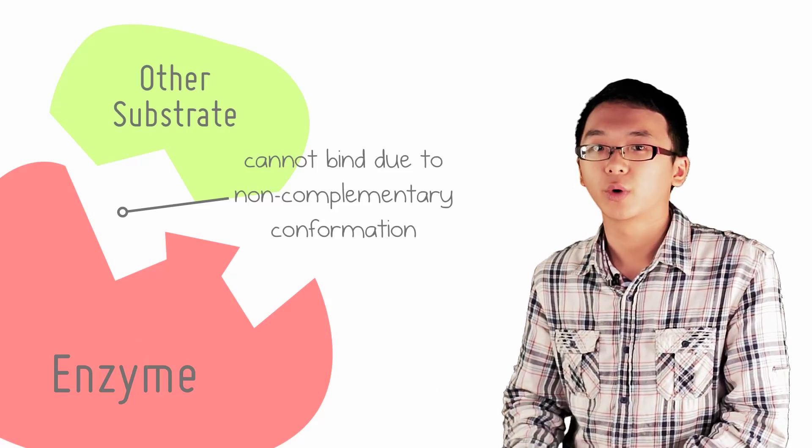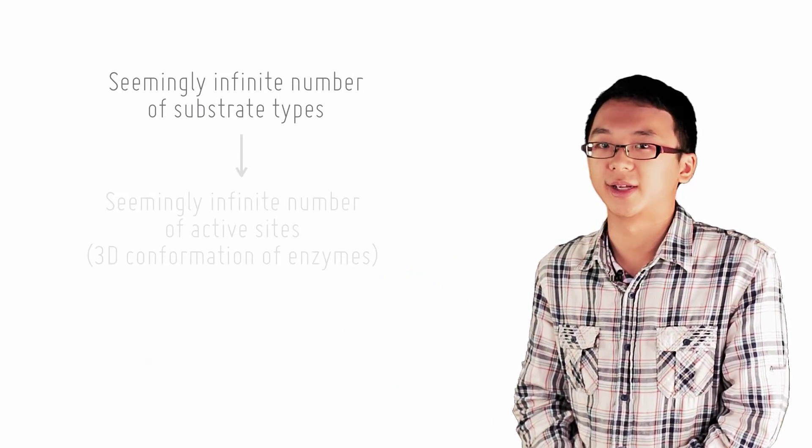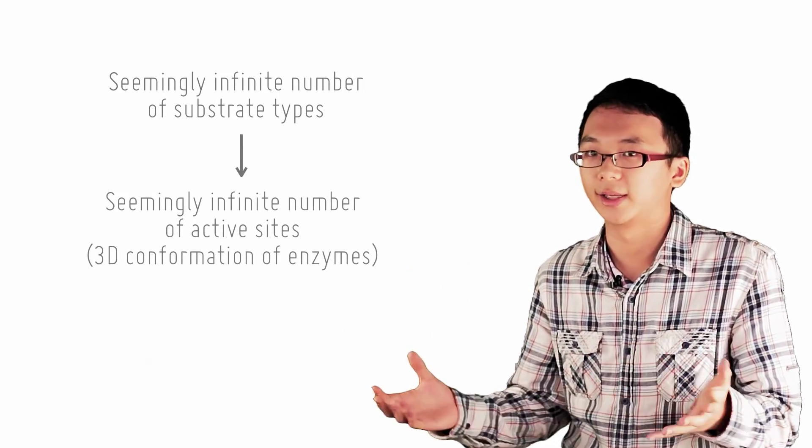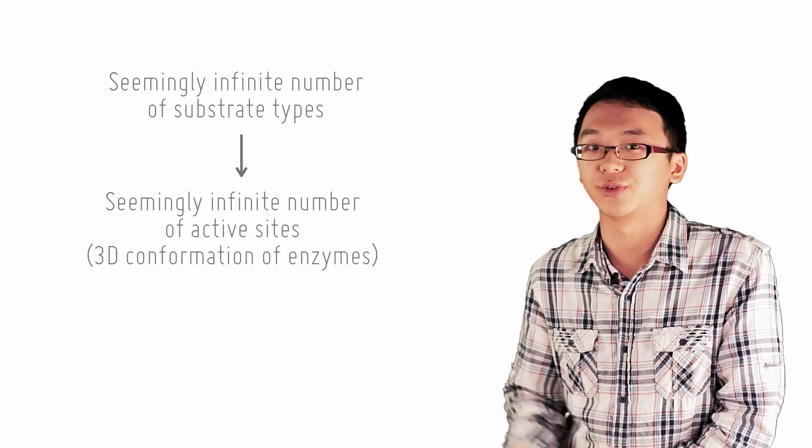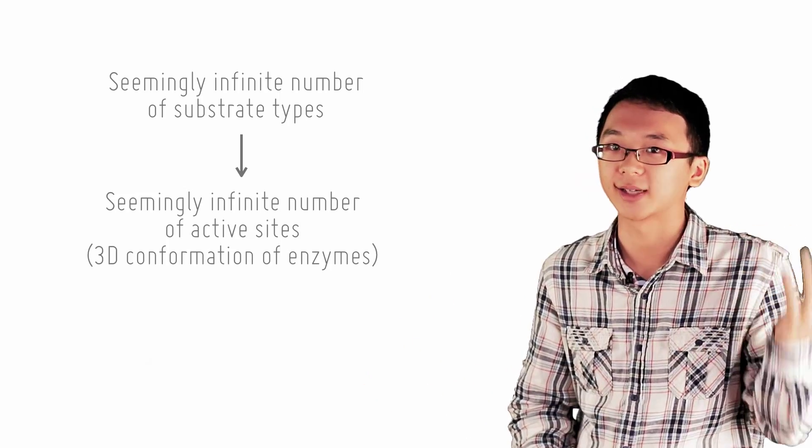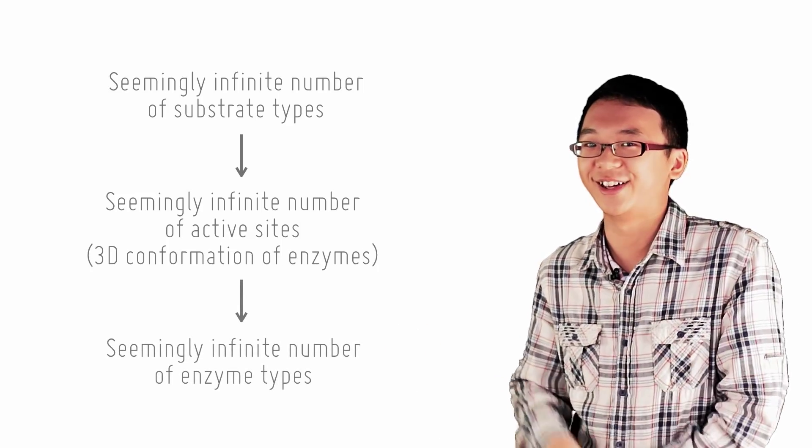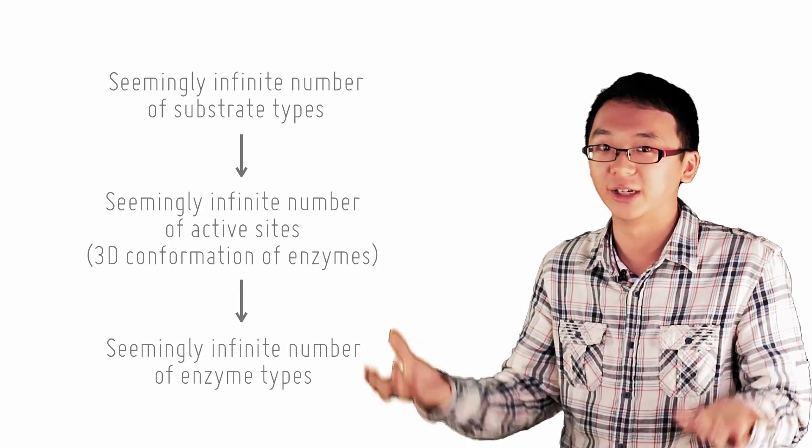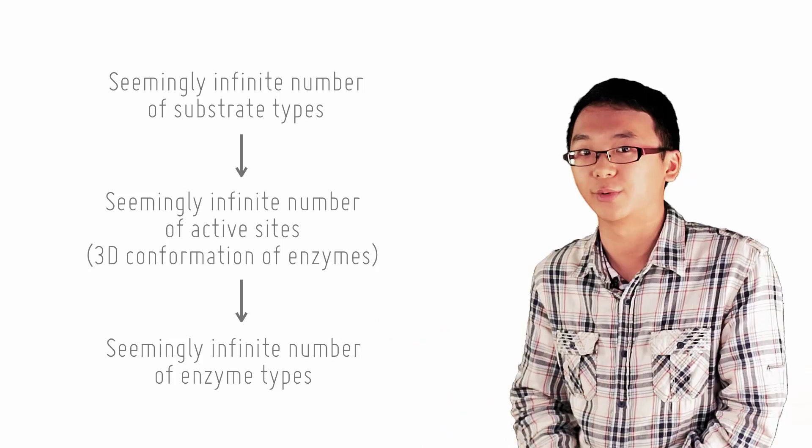What is the significance of this? Well, there are so many different substrates in existence. To account for a seemingly infinite number of different substrates, there needs to be a practically infinite number of different active sites, and thus, a practically infinite number of different 3D conformations or structures of enzymes are required.